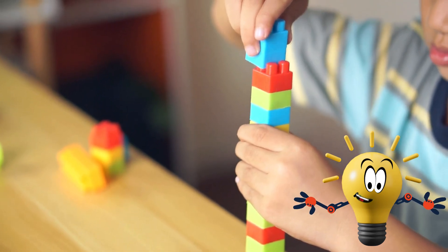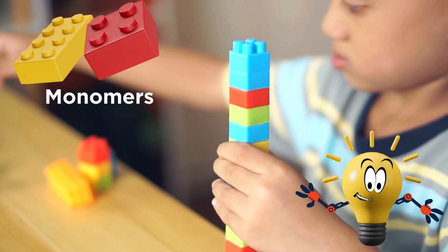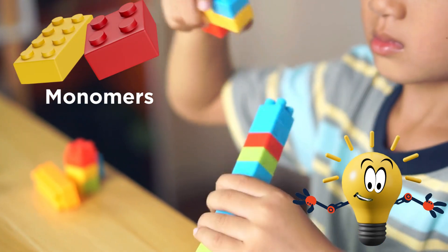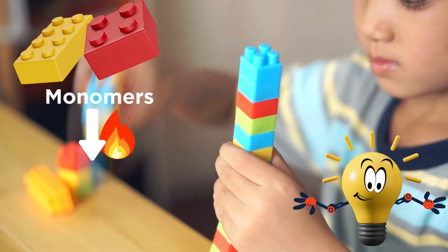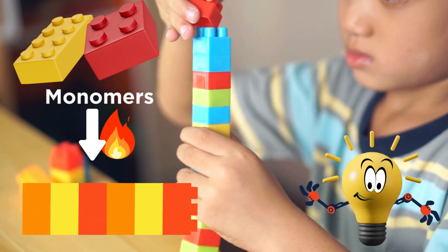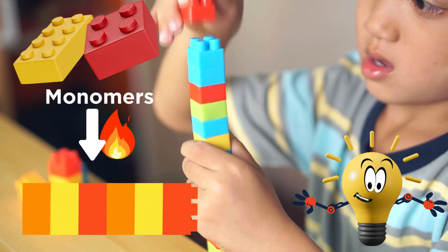Making polymers in a lab is like building a Lego tower. First, we start with monomers, small chemical pieces. Then, using heat or a special reaction, we snap them together into a long, strong chain. Voila, polymer magic.